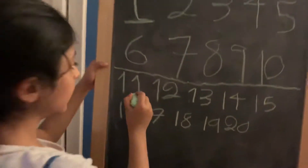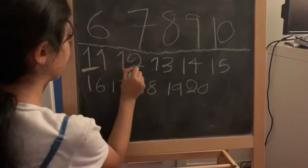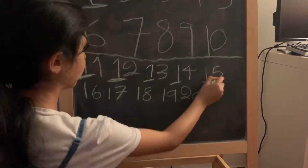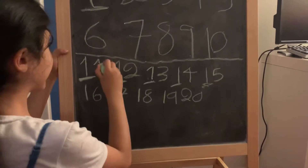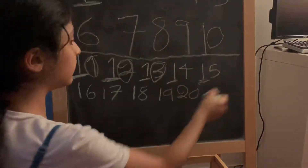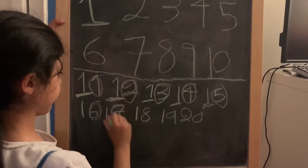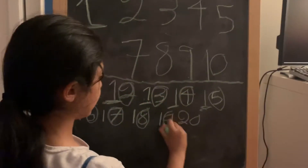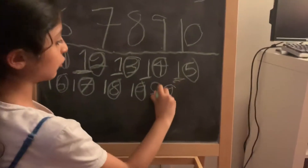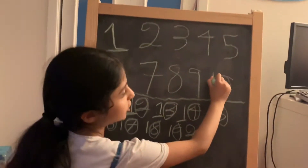So you see every single first digit will be the number one. Then the second digit continues: one, two, three, four, five, six, seven, eight, nine — and when you get to ten, you actually go back to zero. It starts here because here there's a zero.